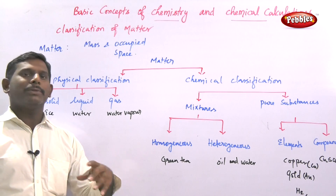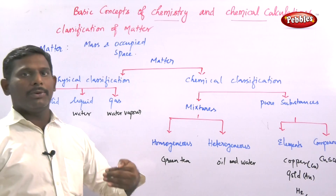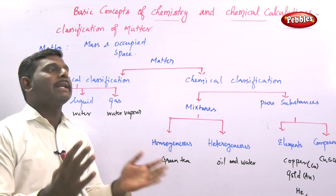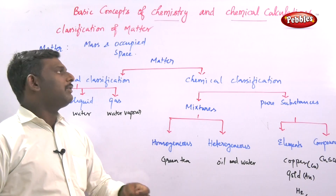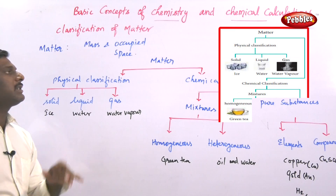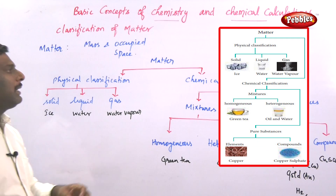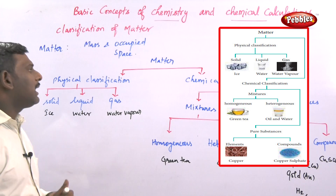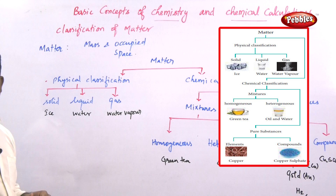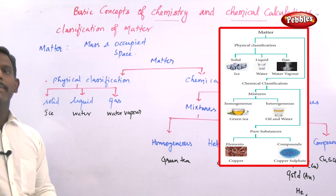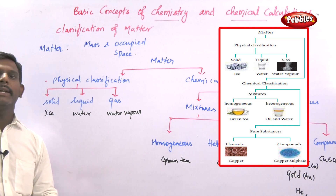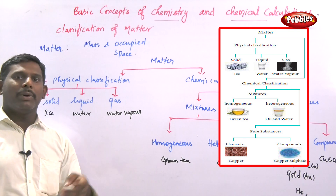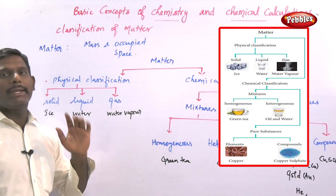Classification is better for gaining knowledge and properties of matter. We should know what classification is and why we classify. In the flowchart, classification of matter: matter can be classified by physical classification. Physical classification of matter is based on its physical state. Based on its physical state, matter can be divided into three categories: solid, liquid, and gas.